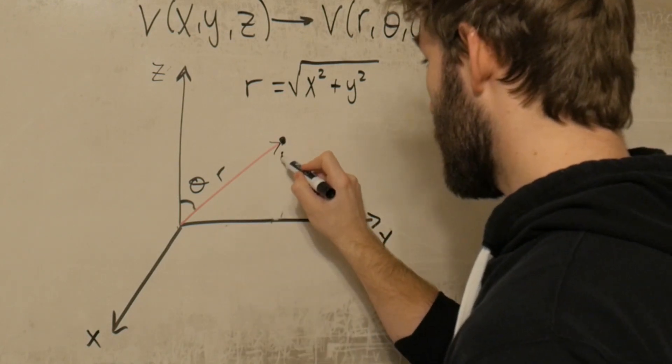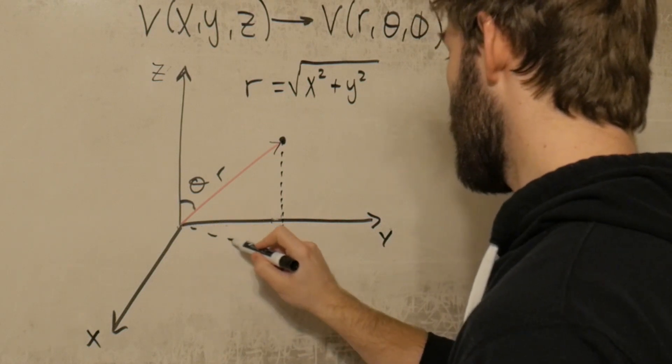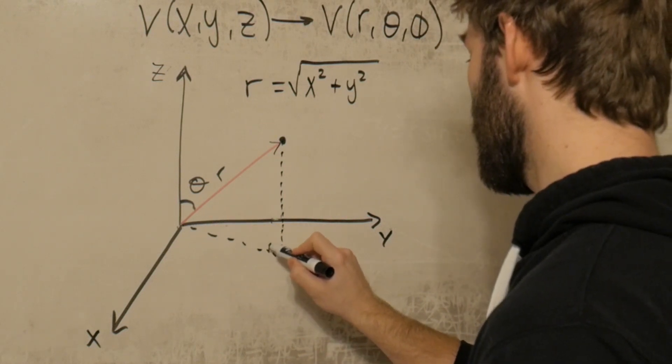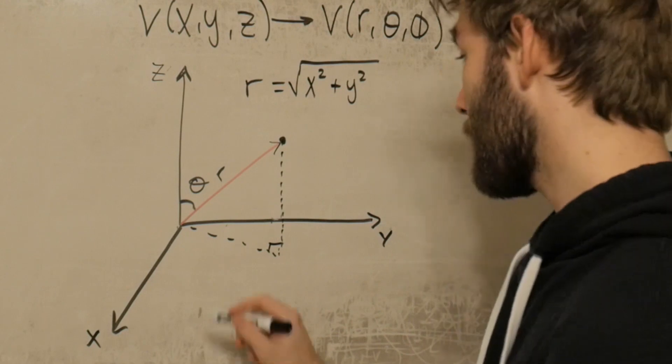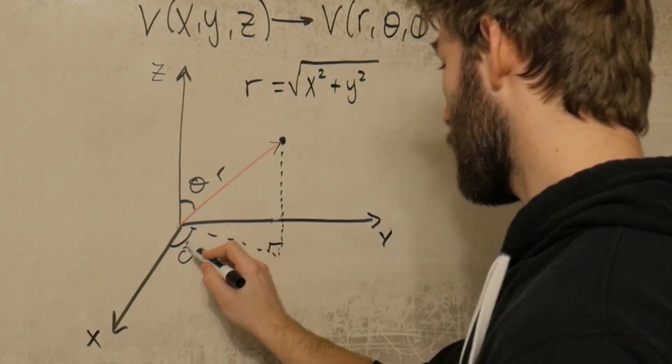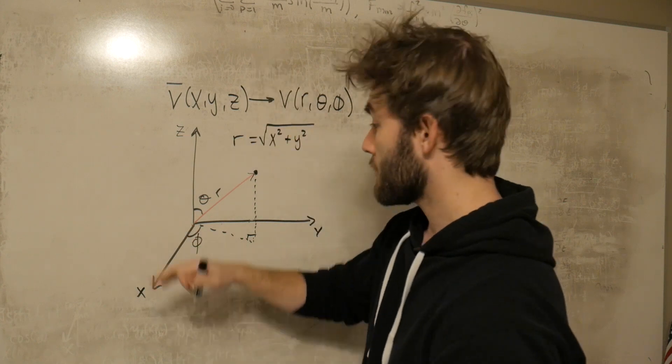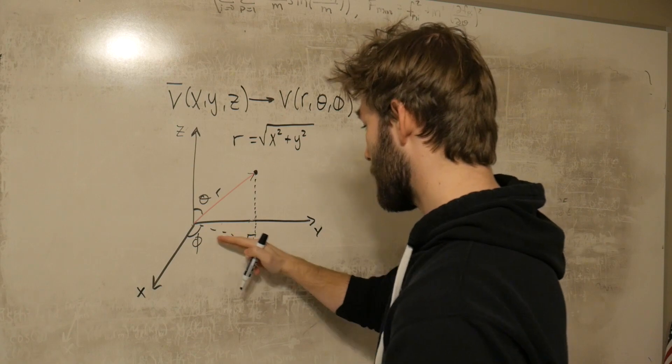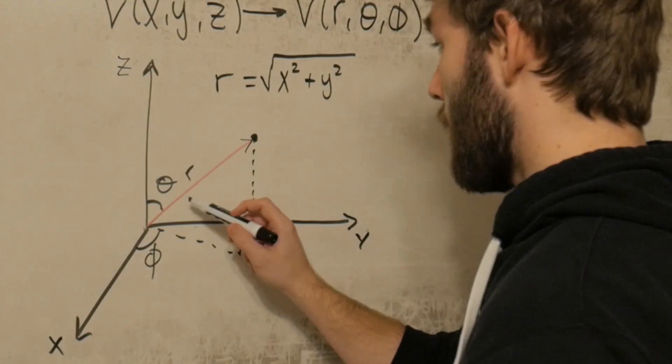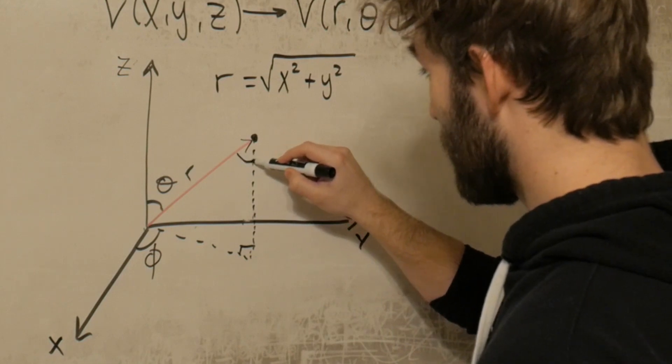We can also talk about the angle between the x axis and the projection of that vector onto the xy plane. So this angle here that we're going to call phi. And you can think of this as if you were to just shine a light down this vector and it were to cast a shadow onto the xy plane. So a little bit of geometry will tell you that if this angle is theta, then this angle is also theta.